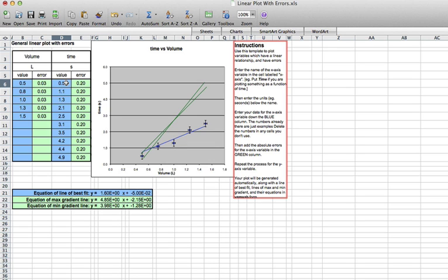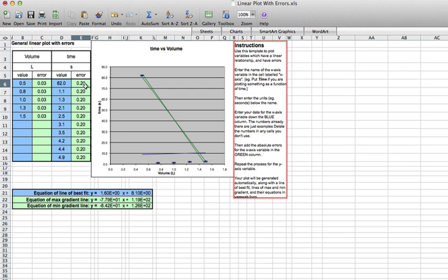Now, to work out the error, what we need to do is use the range divided by 2, which is the biggest minus the smallest divided by 2. So my biggest value was 85. My smallest value was 80. So 85 minus 80 gives us 5. And then I divide that by 2, which gives me 2.5 seconds is the uncertainty there.